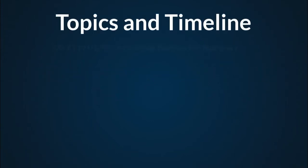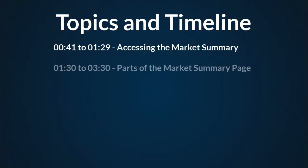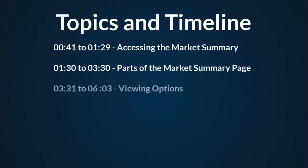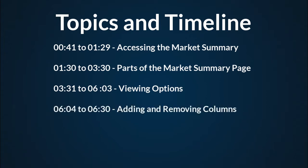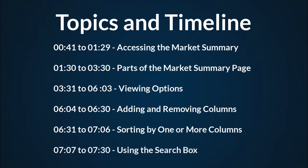Here are the topics and the timeline for today. First, we'll show you where you can access the market summary page. Then we'll go over the different parts of the market summary page. We'll show you the different viewing options: intraday, ETF, or combined. We'll show you how easy it is to add and remove columns to customize the page. Then we'll show you how you can sort by one or more columns. And finally, we'll give an example of using the search box.